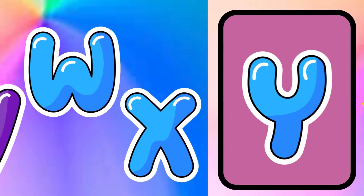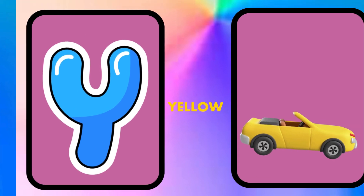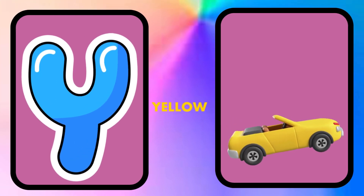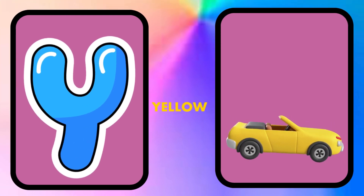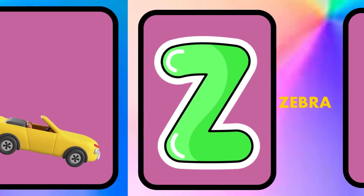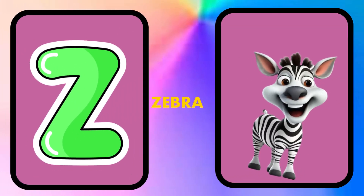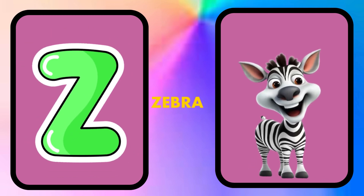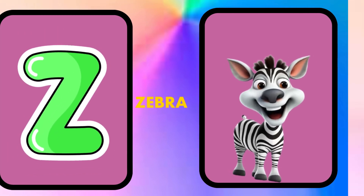Y is for yellow, ye-ye-yellow. Z is for zebra, z-z-zebra.